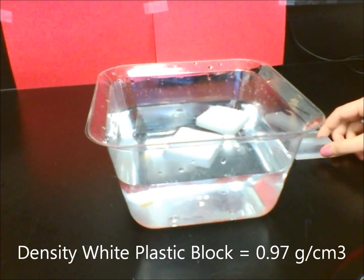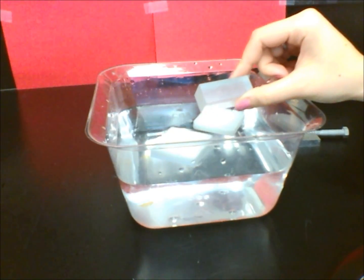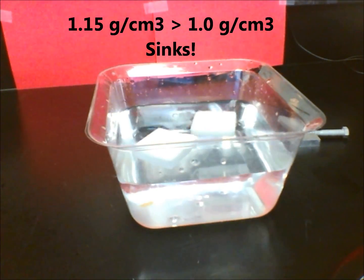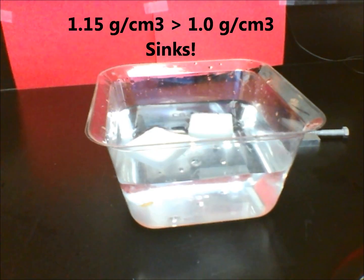The transparent plastic block, on the other hand, has a density greater than 1 gram per cubic centimeter. At 1.15 grams per cubic centimeter, it sinks in water.